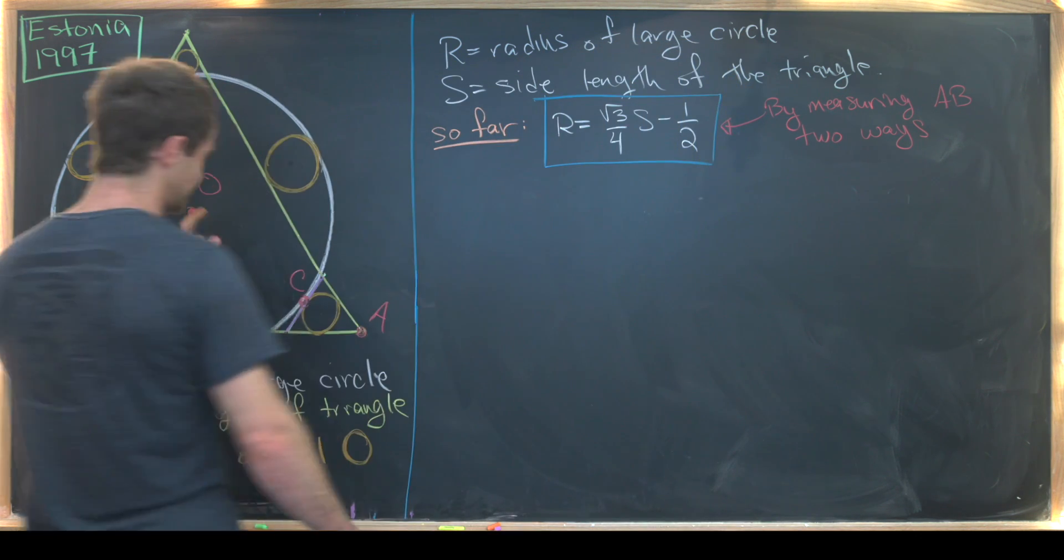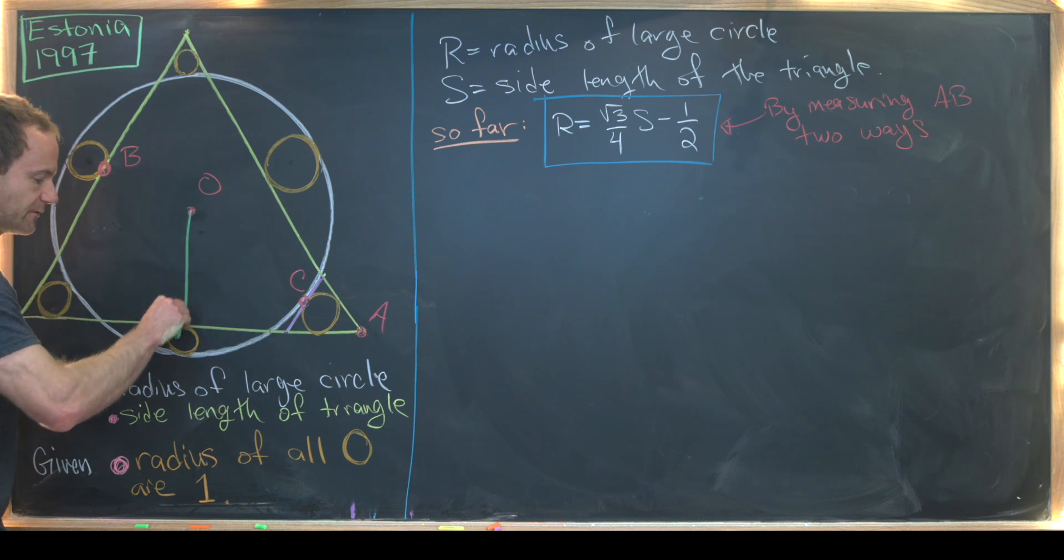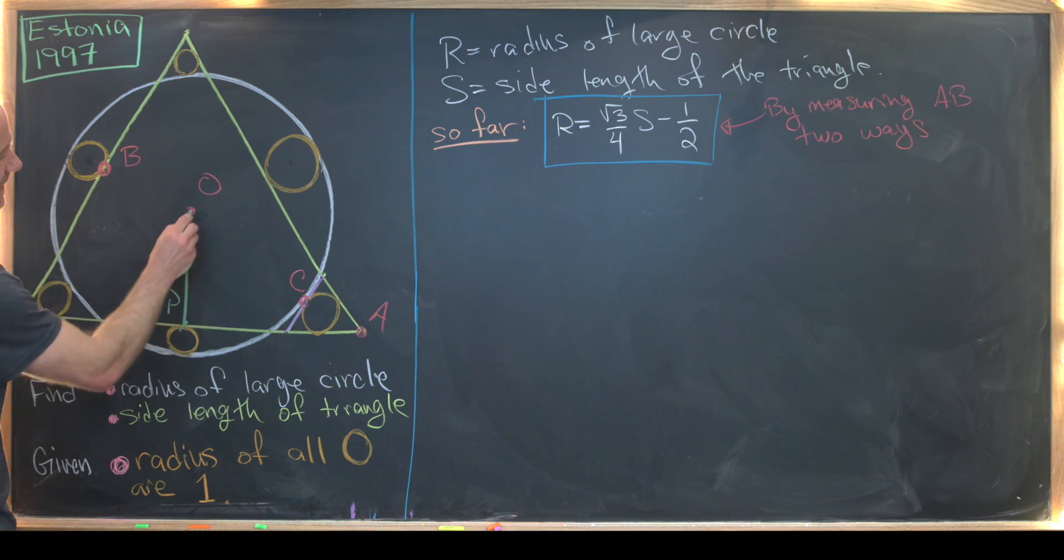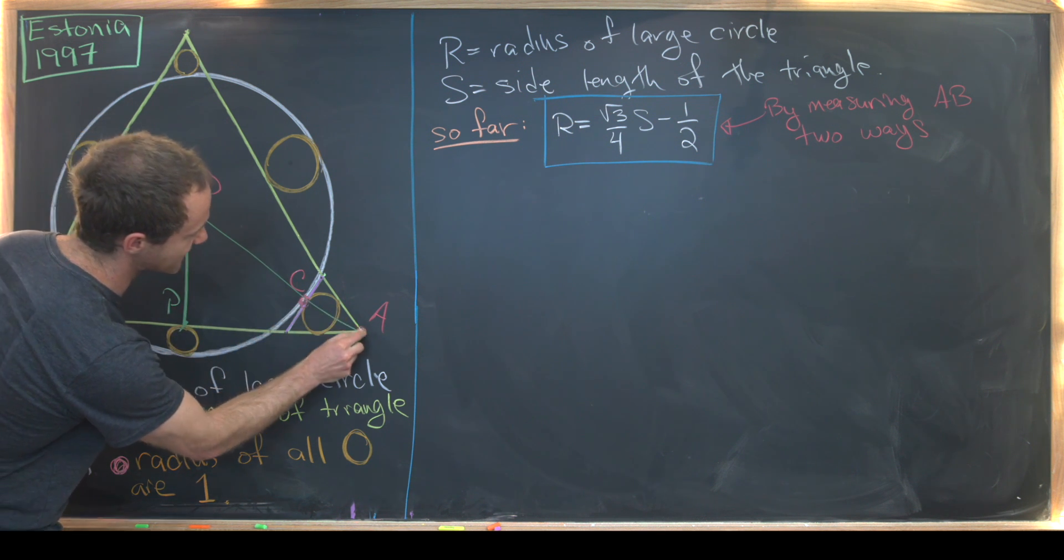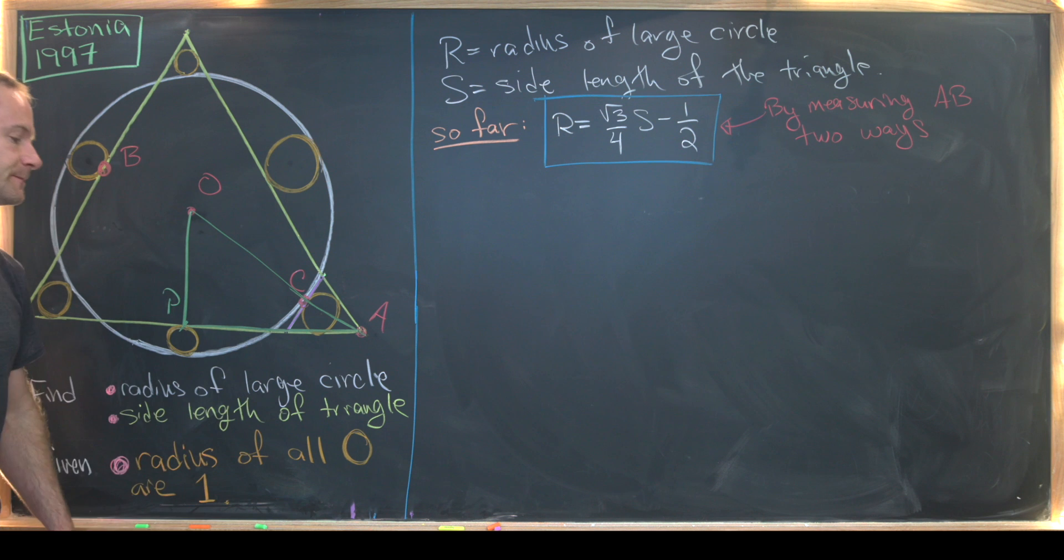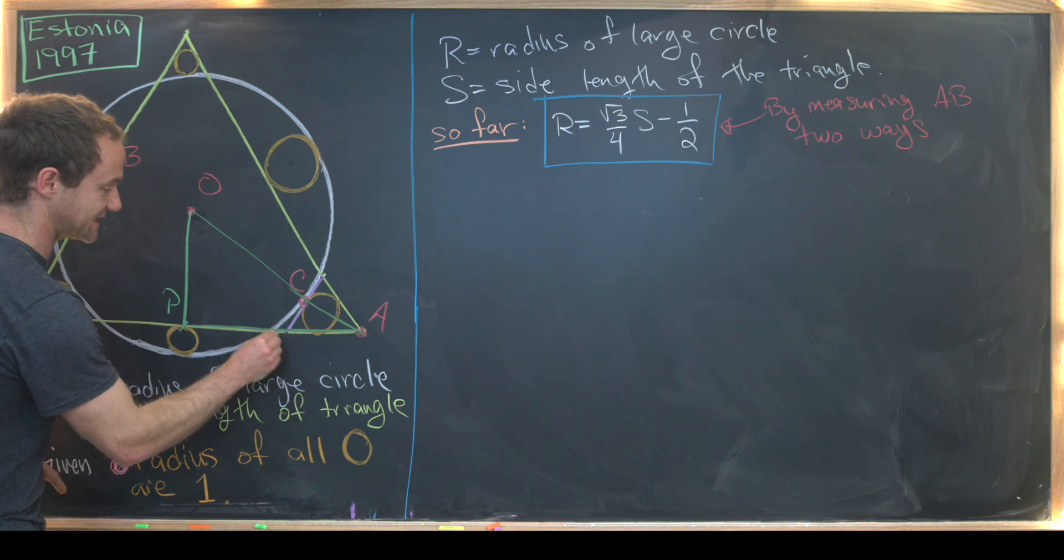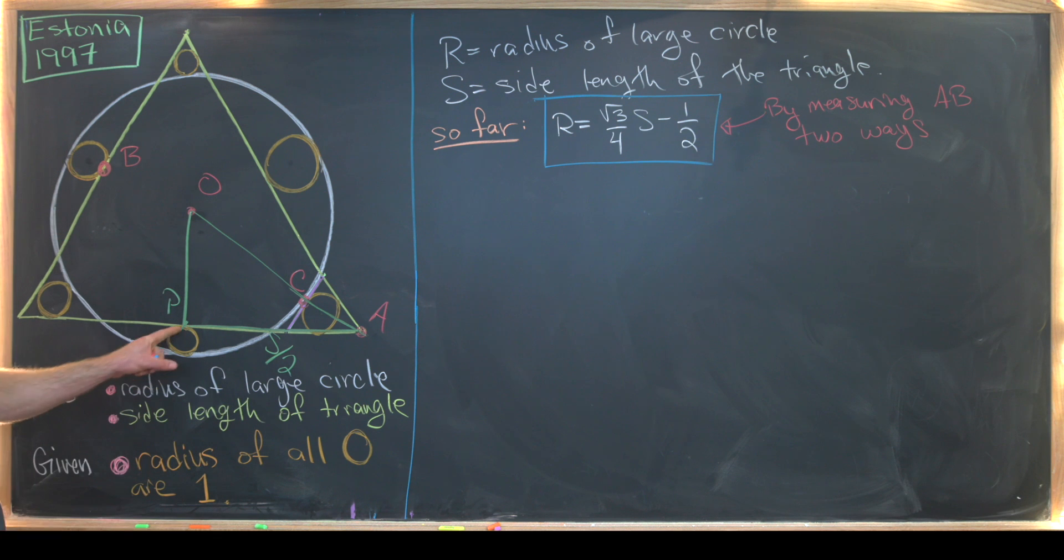So I'll do that by introducing another right triangle into this situation. So it will go from here to here, maybe I'll call this point P, and then down through C to A. Now I want to notice that this length right here is exactly equal to S over two, given the fact that P is pretty clearly the midpoint of this bottom side of the triangle.